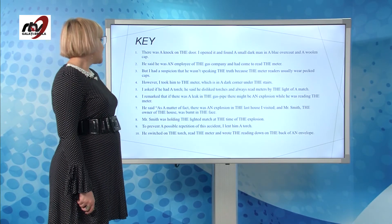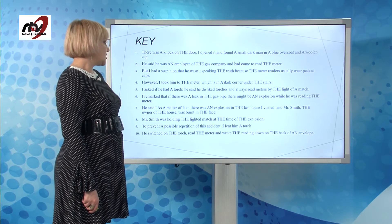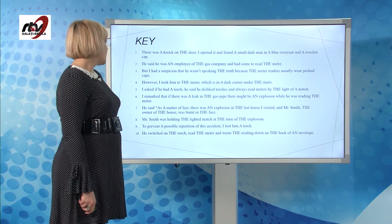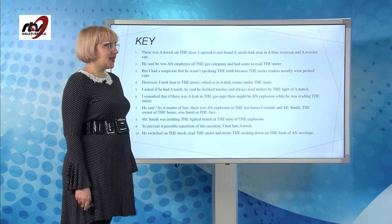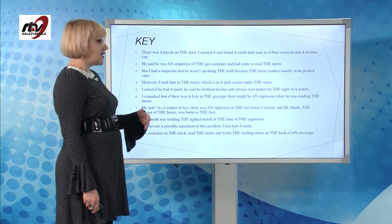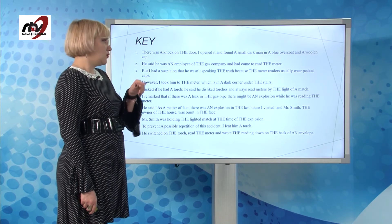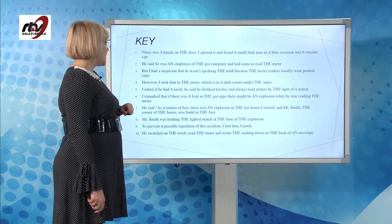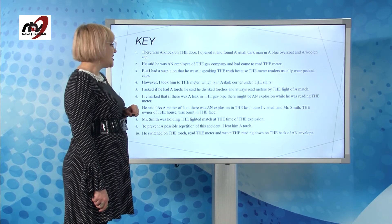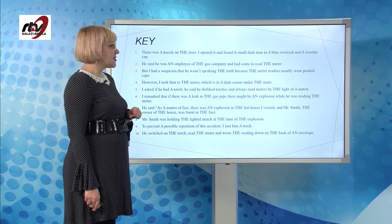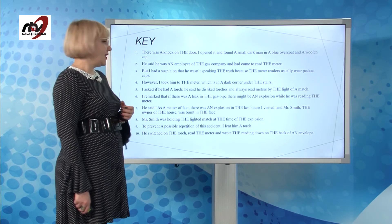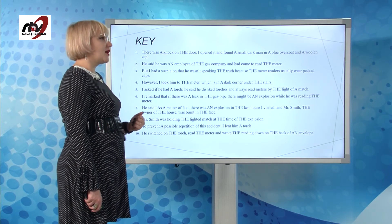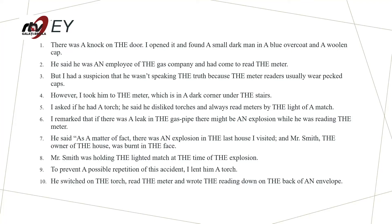And now for the key. Atunci când fac referire la informație nouă, voi folosi — așa cum am spus — "a small dark man," "a blue overcoat" — aceste lucruri sunt informație nouă. "The door" este informație pe care toată lumea o cunoaște. "He said that he was an employee of the gas company and had come to read the meter." El este un angajat din mai mulți ai companiei de gaze, care venise să citească contorul. Toată lumea știe unde este contorul și ce este acela. Iar compania de gaze — mă refer la o companie anume.